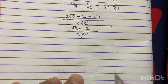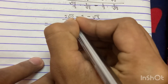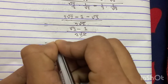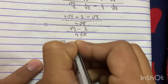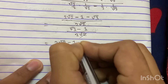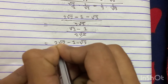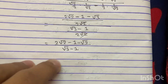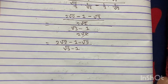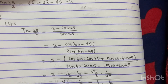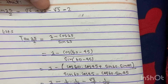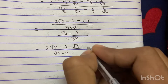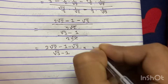So we now have the expression (2√2 minus 1 minus √3) divided by (√3 minus 1). Since we don't want anything in the denominator, we rationalize to remove it.